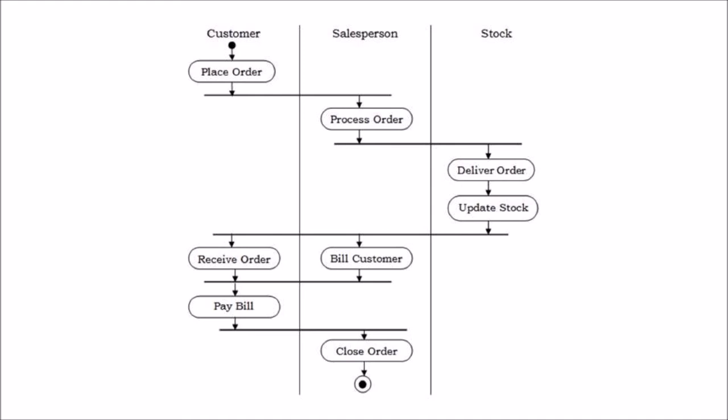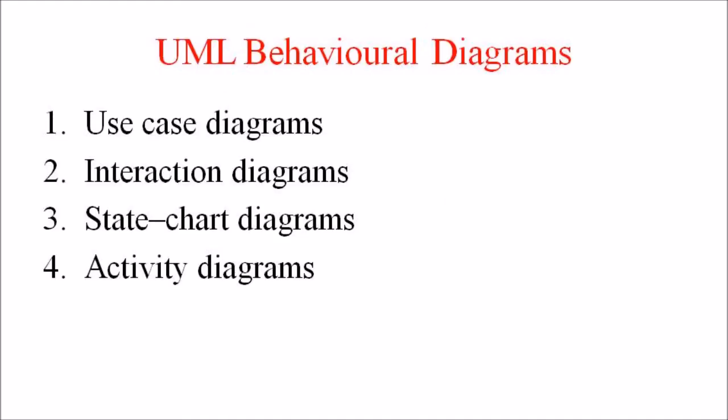These are the different behavioral diagrams in Unified Modeling or UML. The UML behavioral diagrams visualize, specify, construct and document the dynamic aspect of a system. The behavioral diagrams are categorized as Use Case Diagram, Interaction Diagram, State Diagram and Activity Diagram.